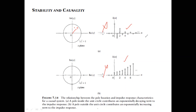For example, 0.5^n · u(n) has Z-transform z/(z − 0.5), so the pole is at +0.5 — inside the unit circle — giving a decaying exponential, very stable. Whereas 2^n · u(n) has Z-transform z/(z − 2), with the pole at 2, giving 2^1, 2^2, 2^3 — highly unstable.